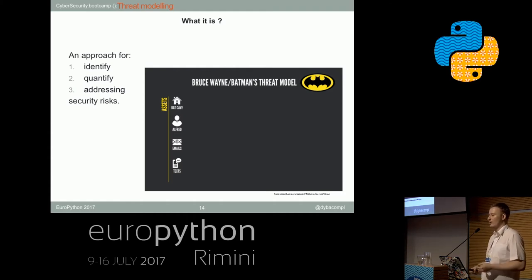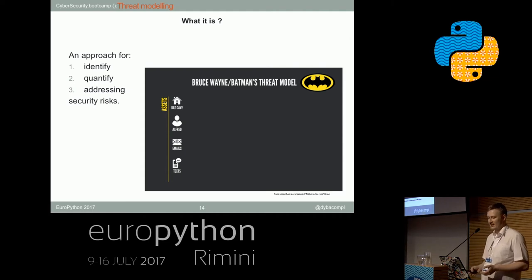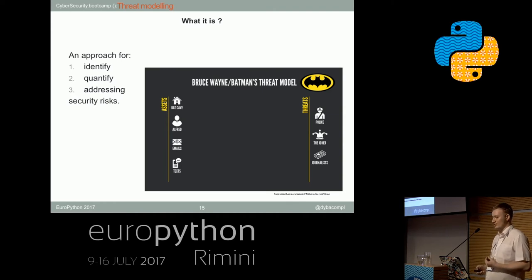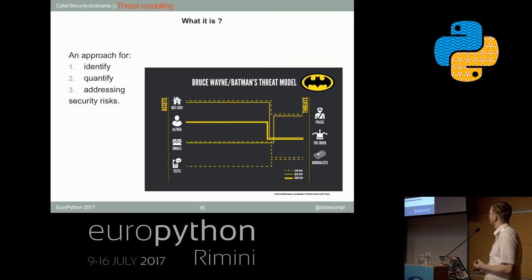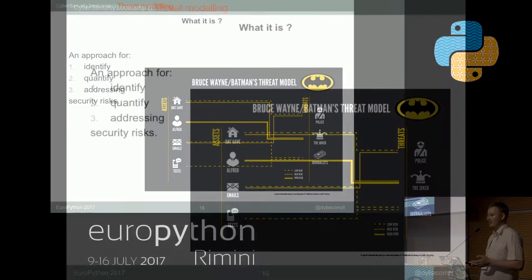We have four main assets: our base of operations — the Batcave — Alfred our butler who handles everything for us, and information in the form of emails and texts. We have three main threats: the police, our archenemy the Joker, and the press. Let's quantify the threats. Alfred is irreplaceable — he's a human being who has access to all of our systems and assets, so he will be our highest priority when defending and the highest risk at the same time. Then we have our Batcave, but we can rebuild it — it's just equipment. And lastly we have information, emails and text messages that can show where we're going or what we're doing. But we can mitigate the press and the police because we can handle them.